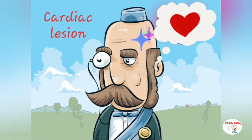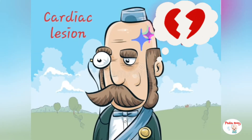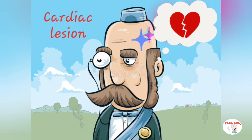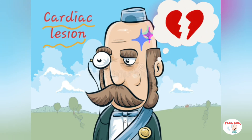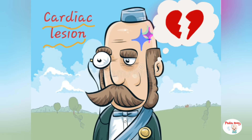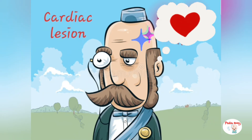No one knew why the Duke disappeared, but his broken heart was a factor. This should make us remember that the presence of predisposing factors like cardiac lesion is one of the minor criteria of Duke criteria.